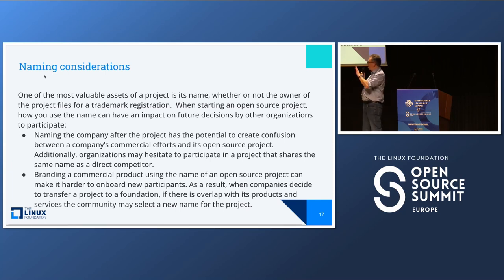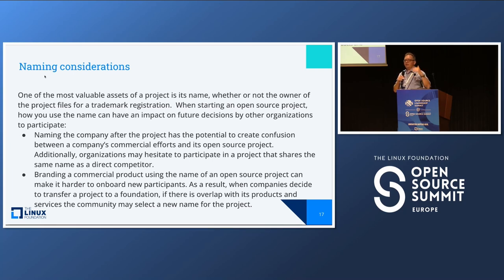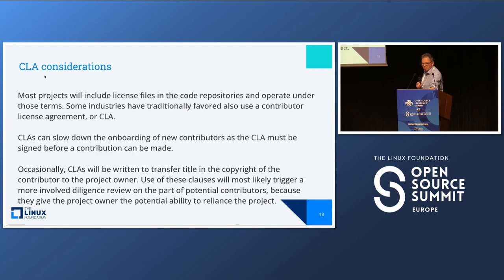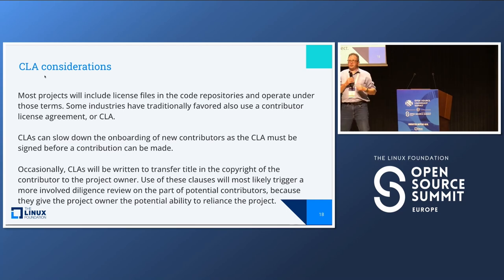Branding commercial products using the name of the open source project creates similar potential for confusion. It also creates a situation where if that project decides to go to a foundation, you have to figure out how to separate the branding of the project from the commercial product. If early on you can have separation between the name of the project, the name of the company, and the name of any products, that makes the transition much easier. The name is also a sensitive point because it's considered a control point — if someone owns a name deeply integrated into the project, that's a potential to exercise control under trademark law, giving rise to more questions and extending the sales cycle.